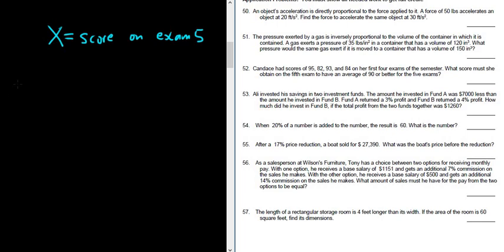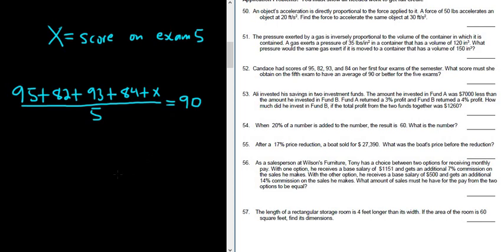And we want the average to be a 90. So to find the average of the five tests, you just add them up and divide by five. So 95 plus 82 plus 93 plus 84 plus x, all divided by five. And we want the average to be a 90, right? She's trying to get an A average. So set the whole thing equal to 90.